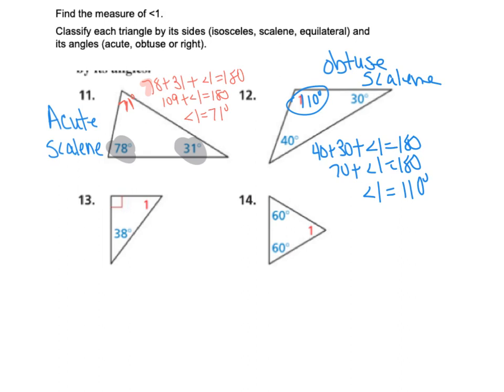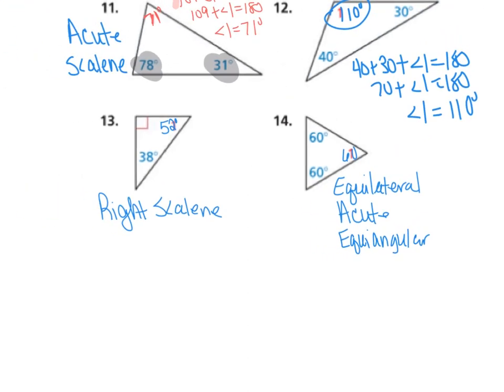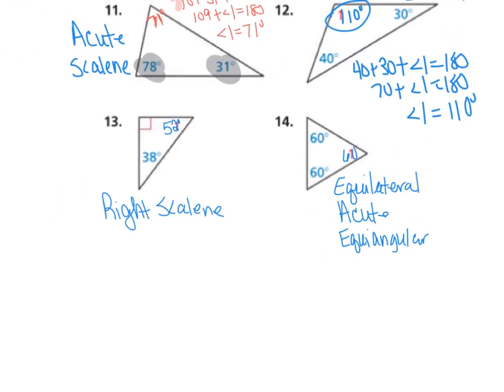Pause the video and figure out numbers 13 and 14, then check to make sure you are correct. On question 13, we have a right triangle because it has a right angle, and none of the angles are the same, so it's going to be scalene. On question 14, it's an equilateral triangle — all three are 60 degrees, all the same side lengths. So we call it equilateral. It's also acute because the angles are all less than 90 degrees, and it's equiangular.